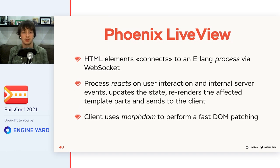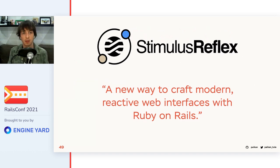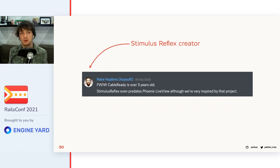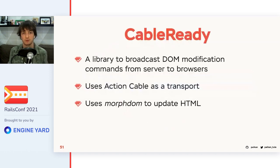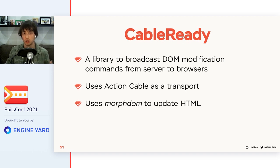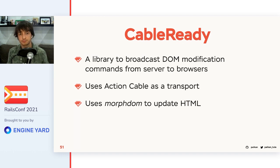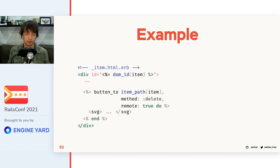In the Ruby/Rails world, the project inspired by LiveView is StimulusReflex. Technically, StimulusReflex is a bit older than LiveView, and its core part, CableReady, has been around for more than three years. But only after LiveView appeared and all the hype around it did StimulusReflex get a push in development. Let's start with CableReady. CableReady is a small, single-purpose library that helps send HTML or DOM modification instructions from the server to browsers. Think of it as remote DOM manipulation controlled by a server. It uses ActionCable as a transport and the MorphDOM library on the client side to update HTML as fast as possible.